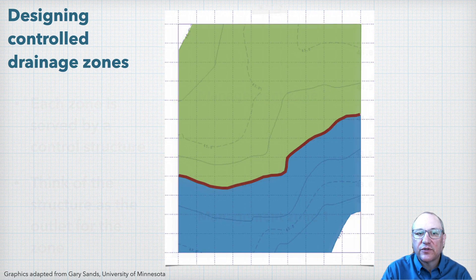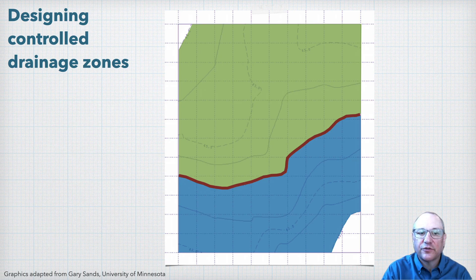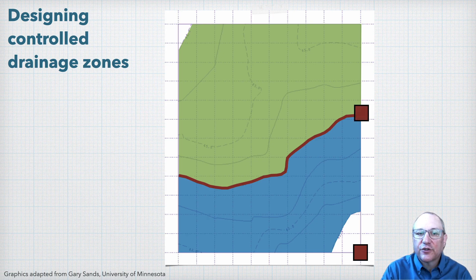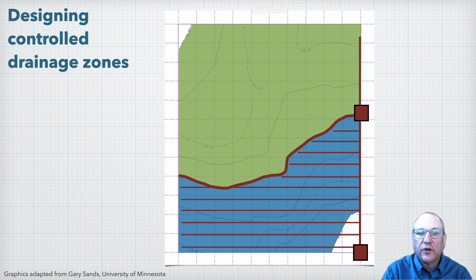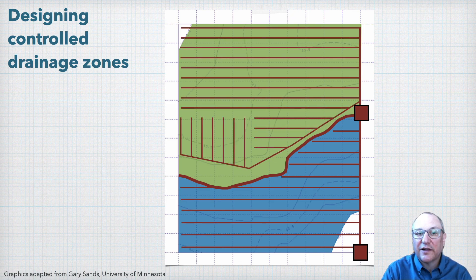Now that we've got our management zones, we can locate our control structures. We could put one at the bottom of the field at the field outlet, and then the second structure could be located anywhere along that 44-foot elevation contour. Now we can design a layout for each zone. For this example, it might look something like this.